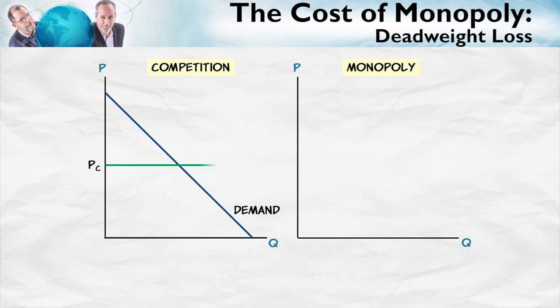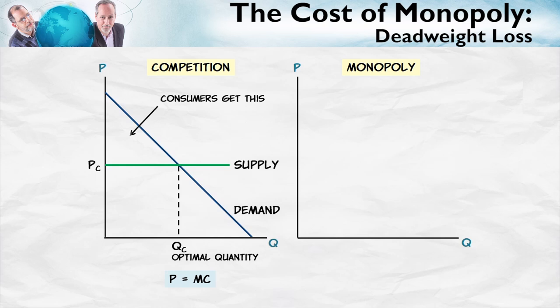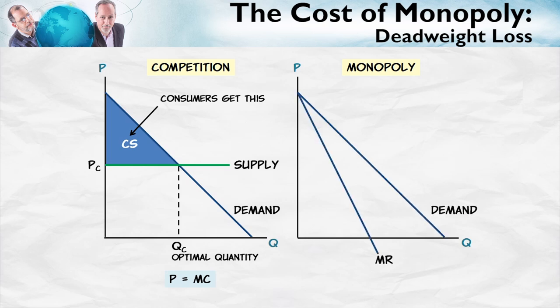Here we'll simplify with a flat supply curve — a constant cost industry. In this case, the total gains from trade go to consumers, shown in this blue area right here. Now let's see what the total gains from trade, or total welfare, is under monopoly, using exactly the same demand curve and the same constant cost curve. We find the profit-maximizing price and quantity in the usual way.